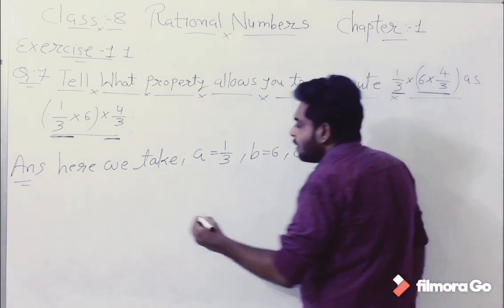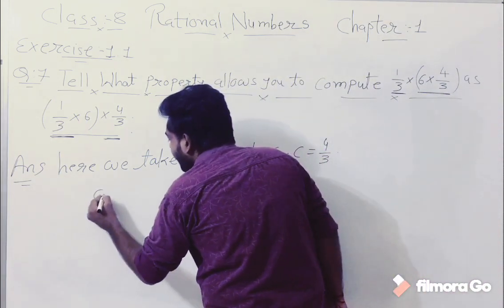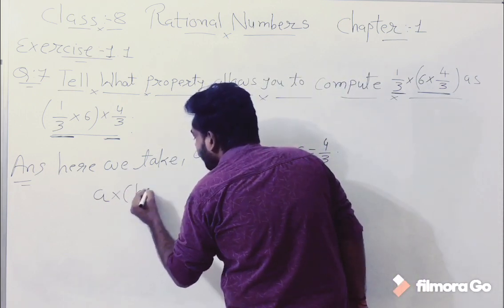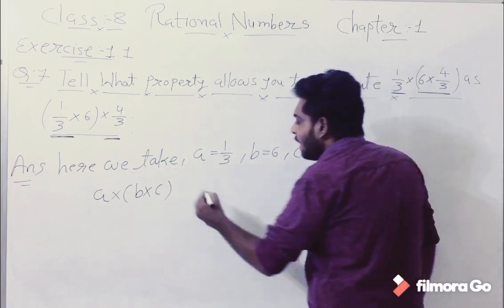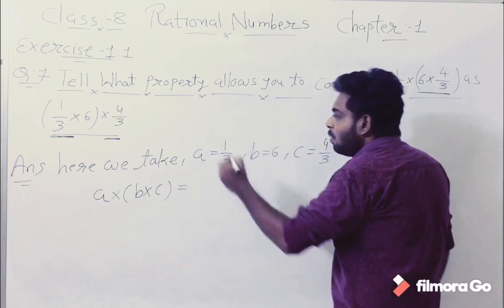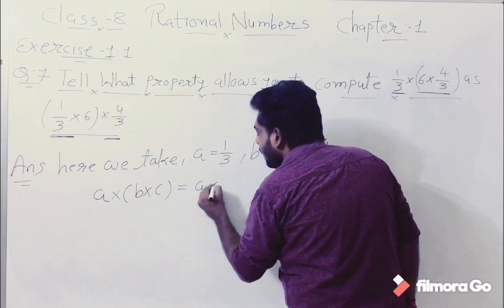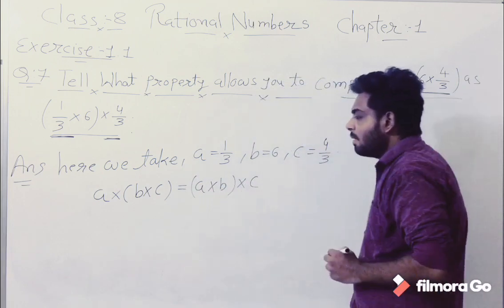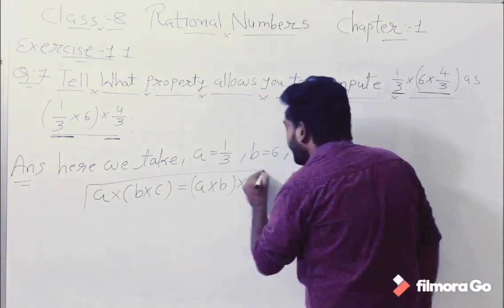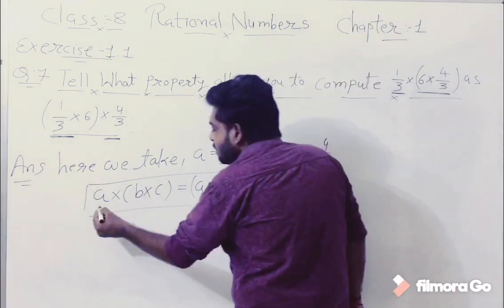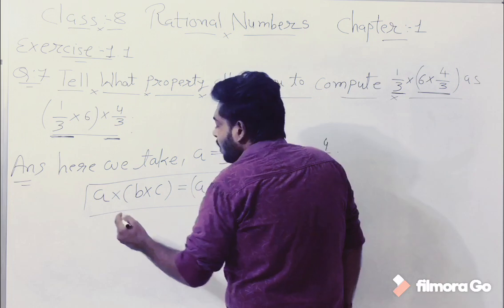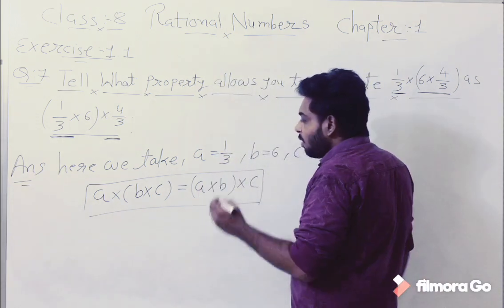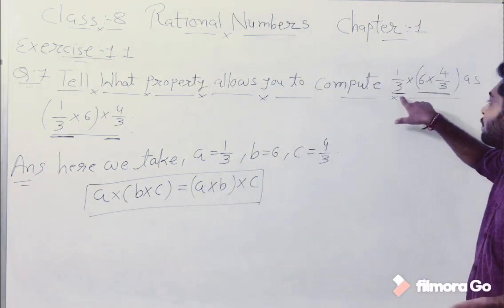So, first is equal to A into B into C. This property is equal to A into B into C.